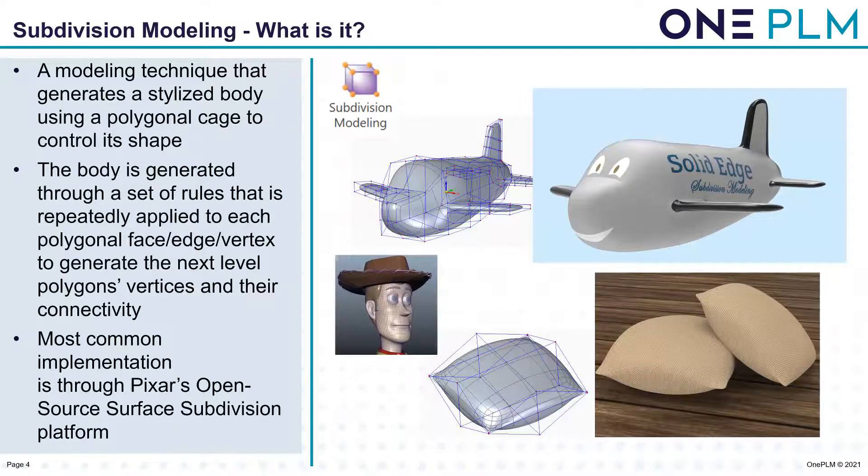So, subdivision modeling — what is it? This is a modeling technique that generates a stylized body using a polygon cage to control its shape. We don't physically touch the body itself; we physically just control the cage. The body is generated through a set of rules that are repeatedly applied to each polygon vertex, edge, polygon face, edge, or vertex to generate the next level of polygons, vertices, and their connectivity. This will make more sense when we see it in action.